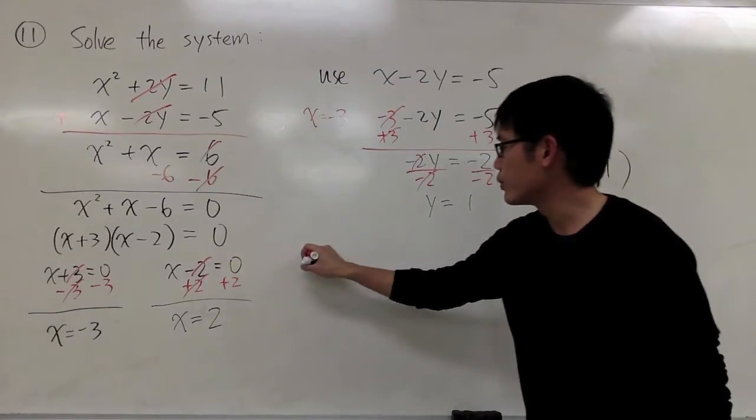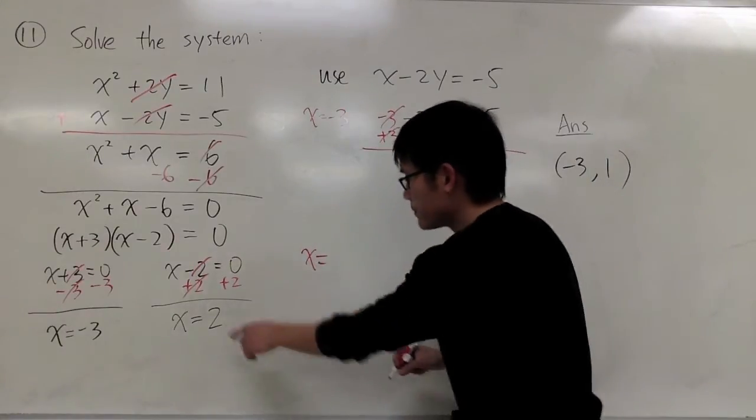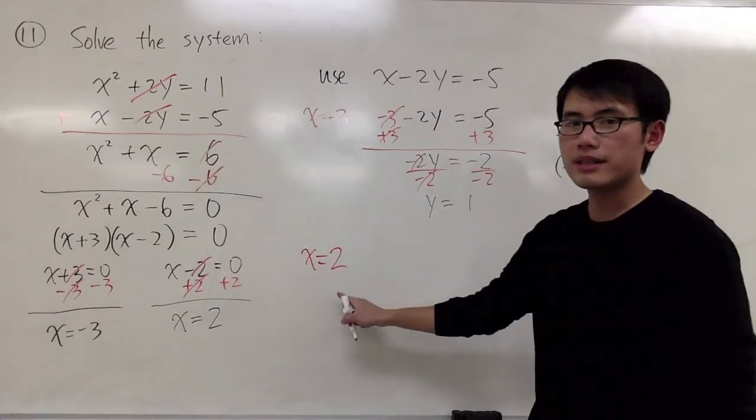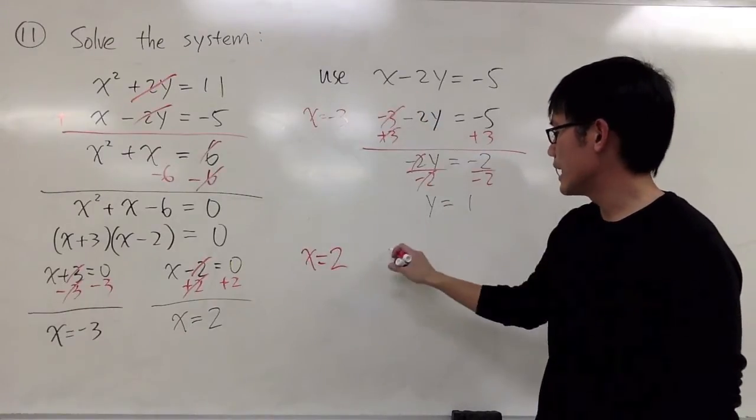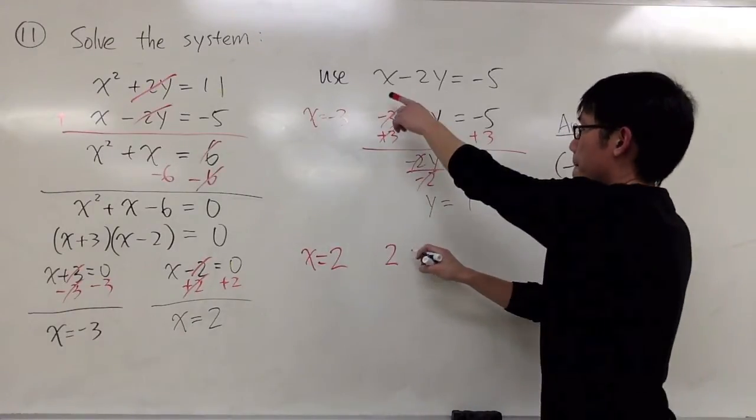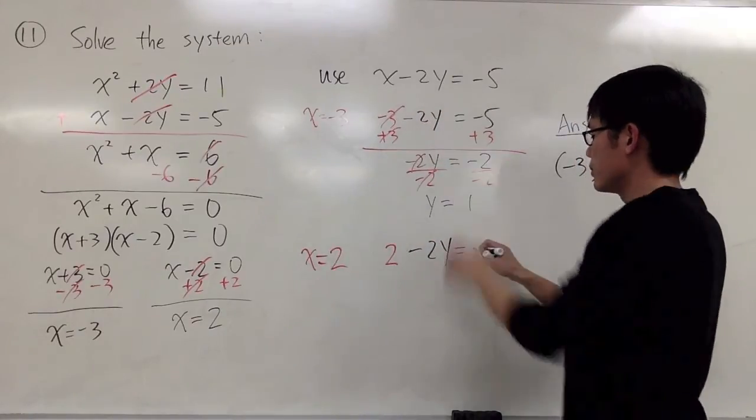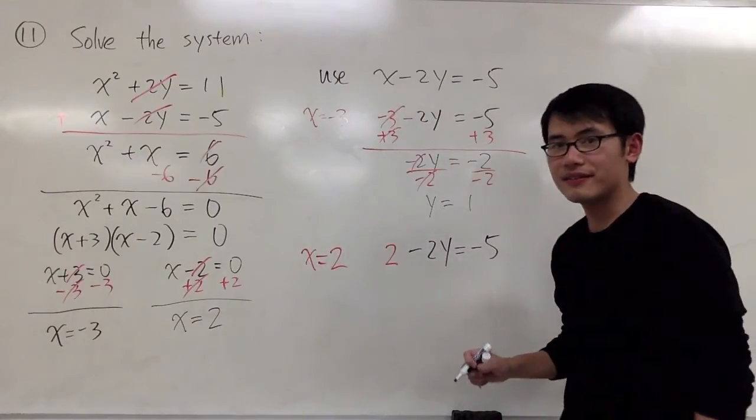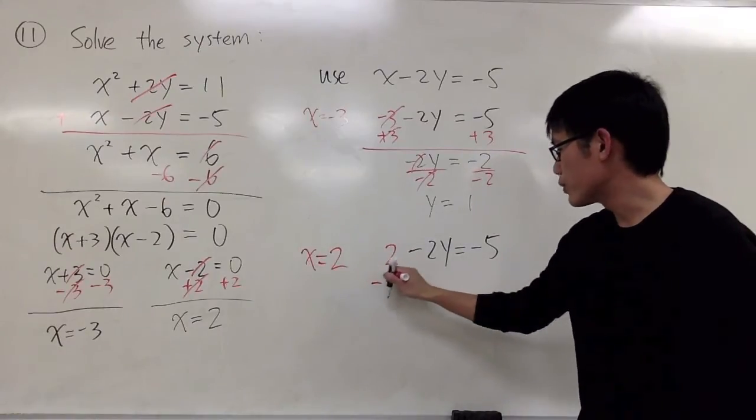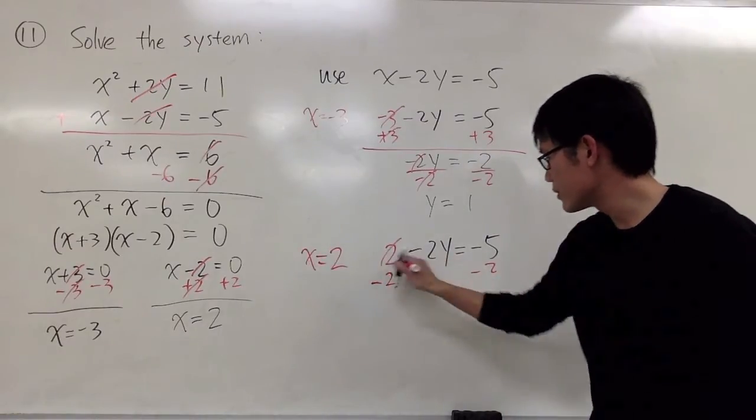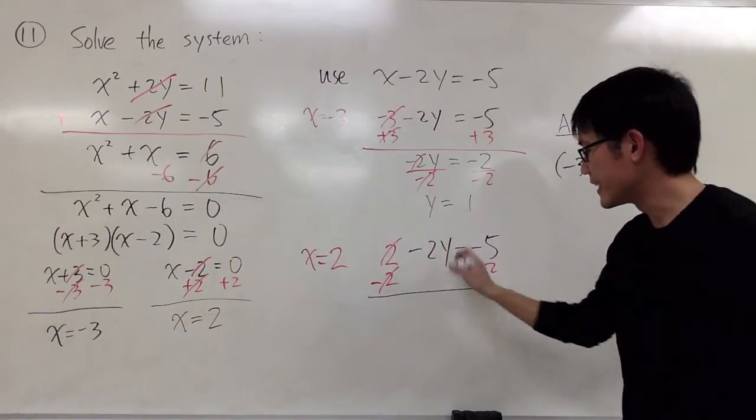And now we also have to do it when x = 2. I'll plug in 2 into the x. I will get 2 - 2y = -5. And I'll just subtract 2 on both sides. Cancel this out. I will have -2y.